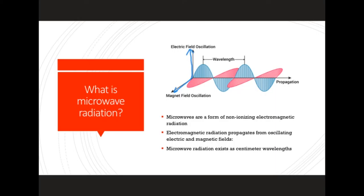The direction that this wave propagates is dependent on the direction of the changing magnetic and electric fields. Electromagnetic waves propagate at the speed of light, c, equal to 3 times 10 to the 8 meters per second.